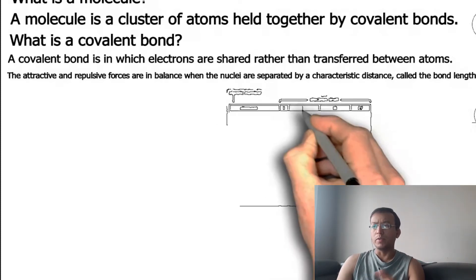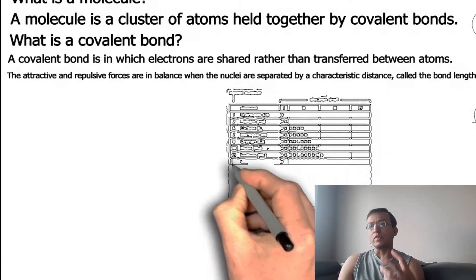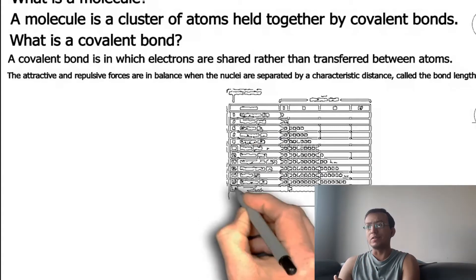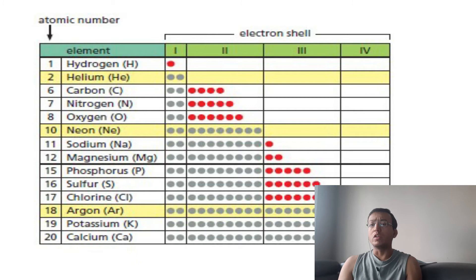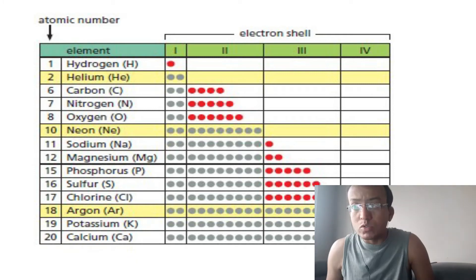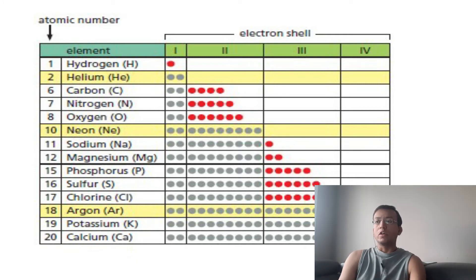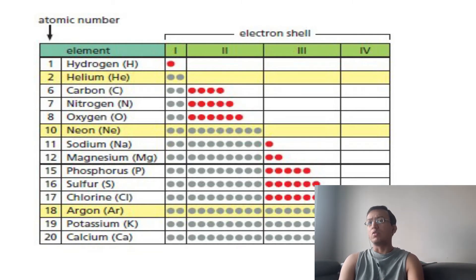A hydrogen atom can form only a single covalent bond because it has just one electron. Other common atoms that form covalent bonds in cells include oxygen, nitrogen, sodium, potassium, and importantly carbon, which can form more than one covalent bond.